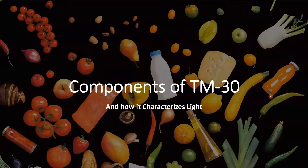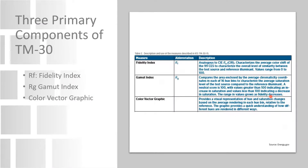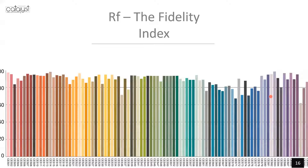Let's get into the three TM-30 components in detail. First: the Fidelity Index, Rf. It is analogous to CRI and uses 99 samples, all chosen from real-world objects — nature, skin, textiles, paints, plastics, printed materials, color systems — further broken down into 16 hue bins. It's a much more demanding index, but Rf is comparable to CRI: a scale of 0 to 100, with 100 being a direct equivalent to our reference source, the sun.